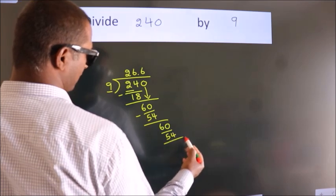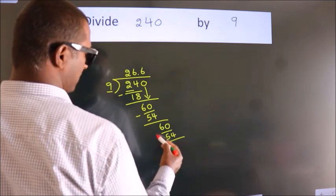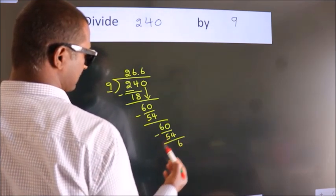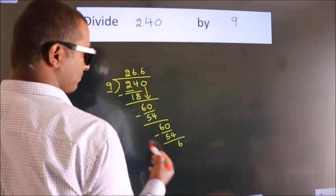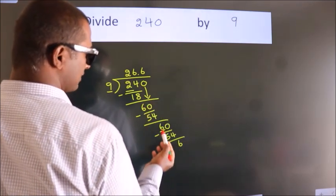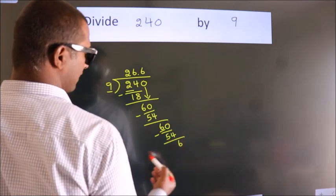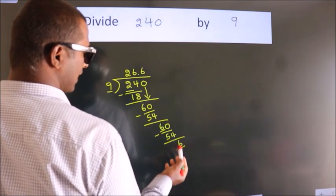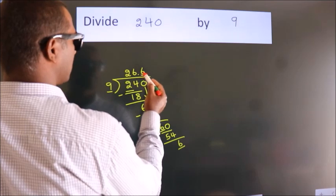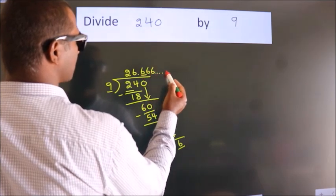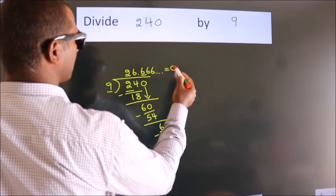Now we subtract, we get 6. Now you observe here we had 6 and we got 6 again. That means this number keeps on repeating. So this is our quotient.